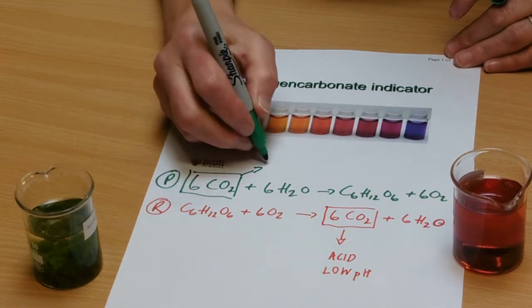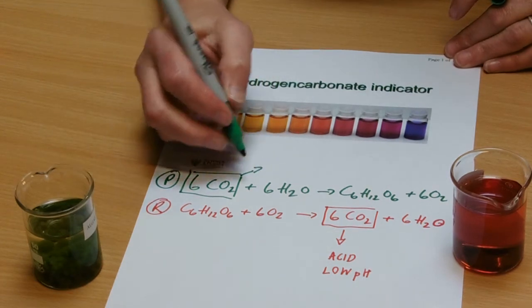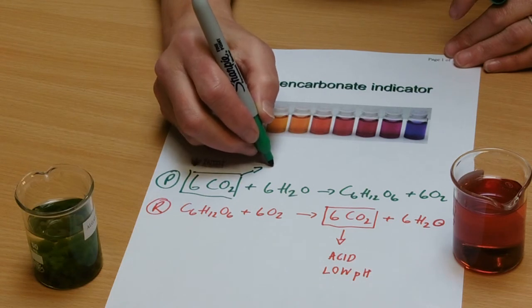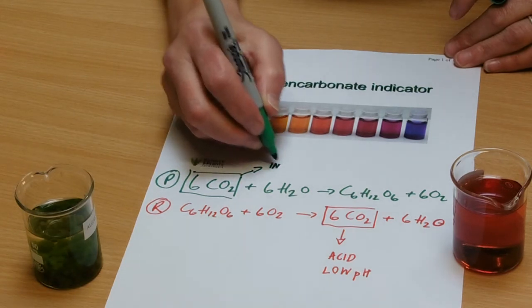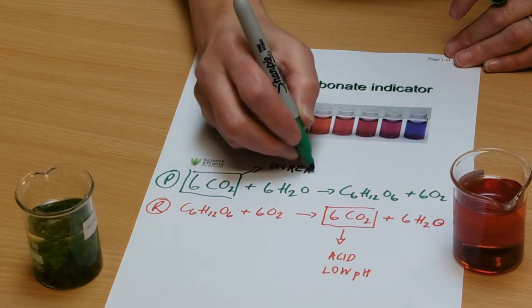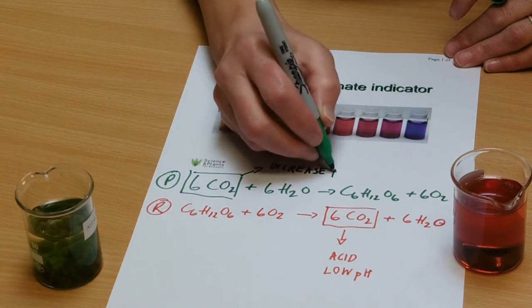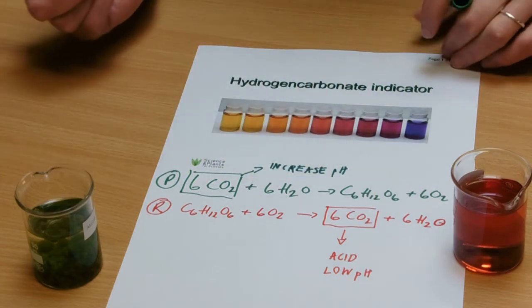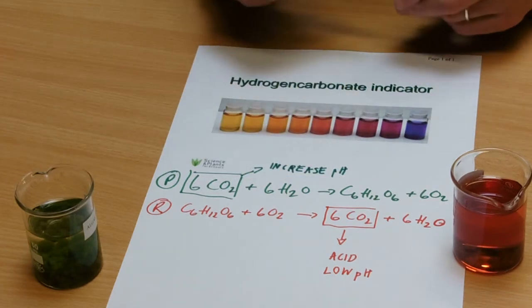So by default then, if we take away the carbon dioxide, it's going to increase pH. And that's going to change the color of the indicator.